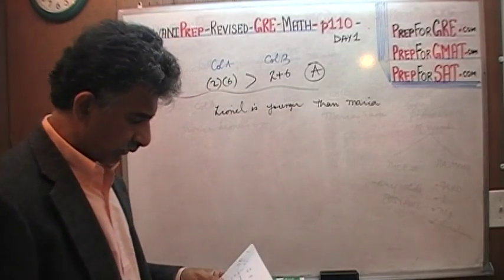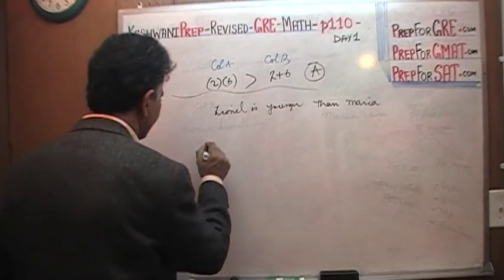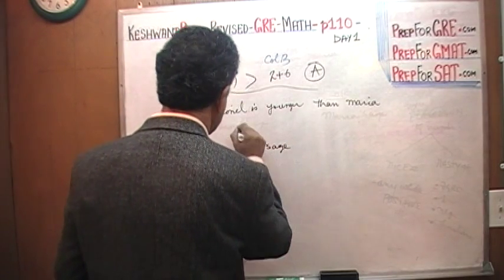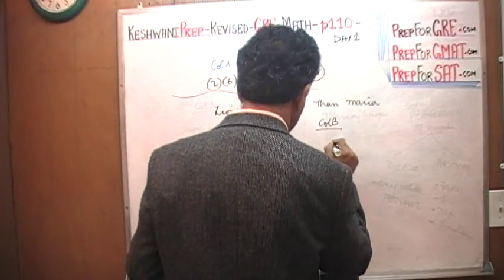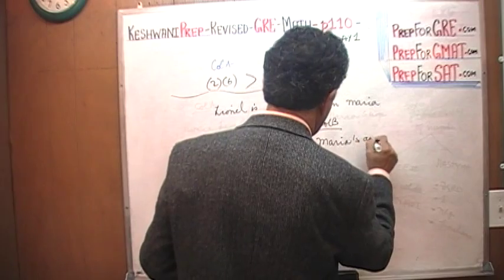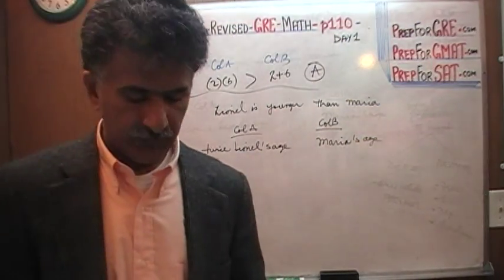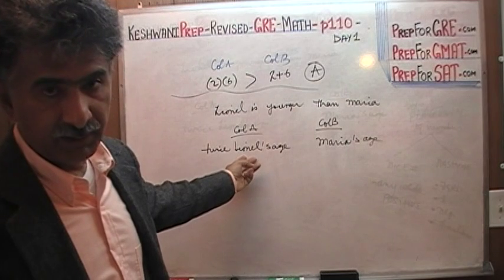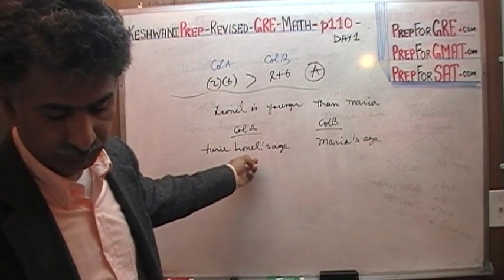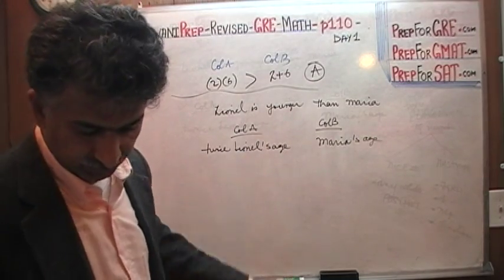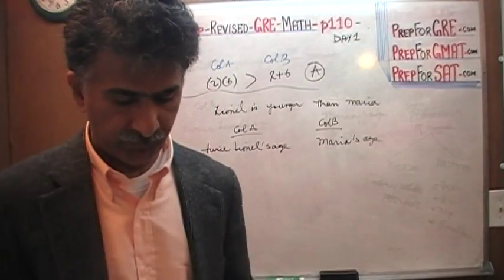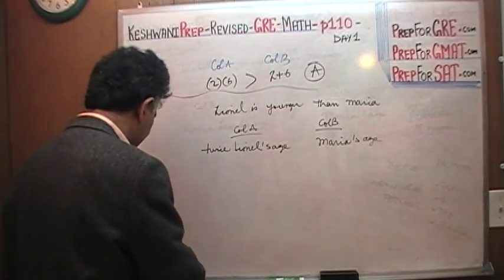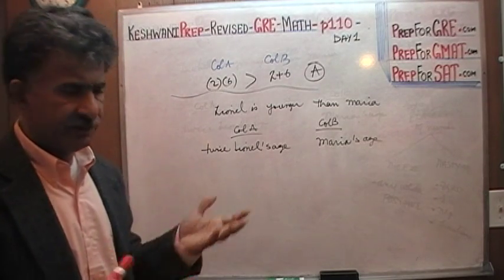They're asking us how does twice Lionel's age compare to Maria's age, not twice Maria's age but simply Maria's age. The simplest and quickest way to solve this problem is to plug in numbers. Make up ages for Lionel, and if you find two different scenarios where the answer changes, then the answer is going to be D.